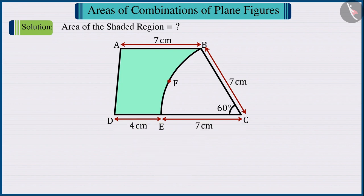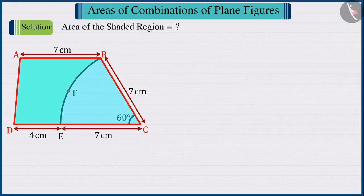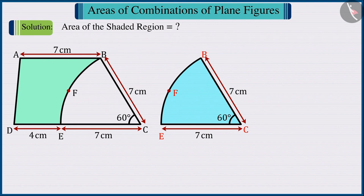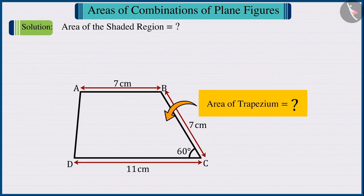Looking at the figure, we can say that the shaded region is obtained by subtracting the area of sector CBFE from the area of trapezium ABCD. Can you find the area of trapezium? Come on, let's see.